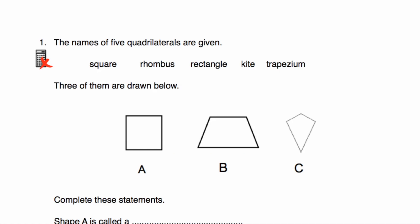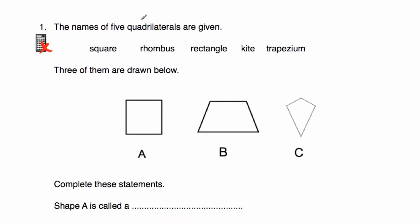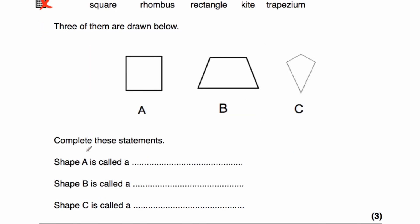Question number one. The names of five quadrilaterals are given: square, rhombus, rectangle, kite, and trapezium. Three of them are drawn below as shapes A, B, and C. Shape A has four equal length sides, four right angles, and four lines of symmetry — so shape A is a square.